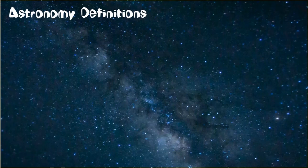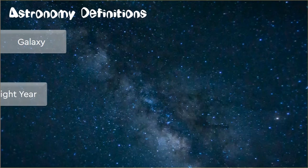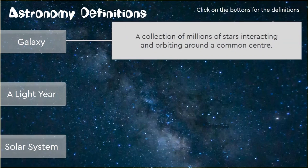Let's explore a few astronomy definitions. Galaxy — do you know what a galaxy is? Then we will look at a light year and the solar system. A galaxy is a collection of millions and millions of stars, interacting and orbiting around a common center. In our case, the Milky Way is our galaxy, and everything orbits around our sun.